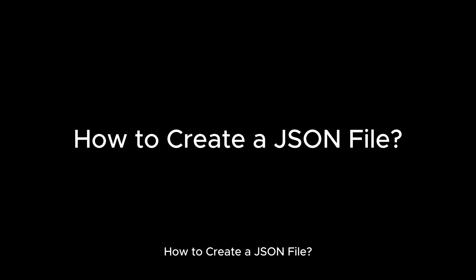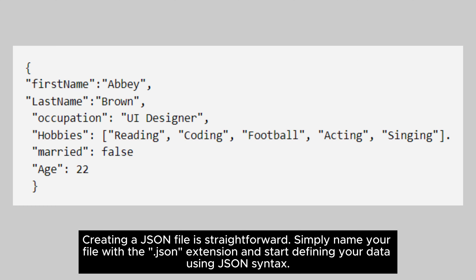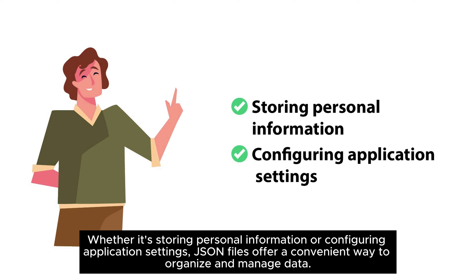How to create a JSON file. Creating a JSON file is straightforward — simply name your file with the .json extension and start defining your data using JSON syntax. Whether it's storing personal information or configuring application settings, JSON files offer a convenient way to organize and manage data.